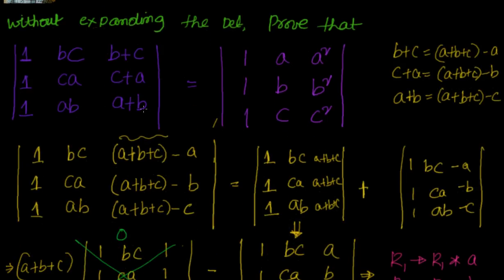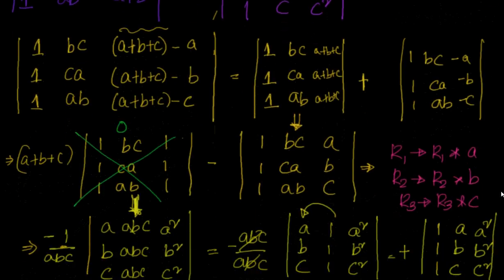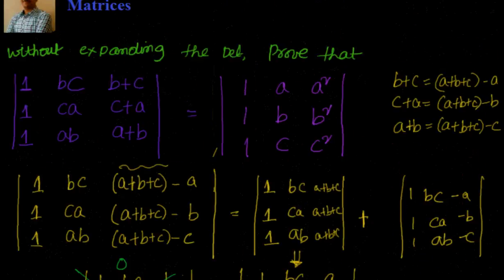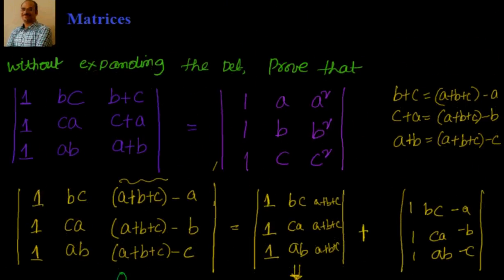So the important point in solving this problem is how to remove B+C, C+A, A+B. To remove that we leveraged that this is equal to A+B+C minus A, minus B, minus C. Then you divide this whole determinant into two parts and the first part becomes zero. The second part with a little bit of manipulation proves that it's equal to whatever is needed. See you in the next video where we will do more problems in the same variety without expanding the determinant. Thanks for visiting, bye for now.